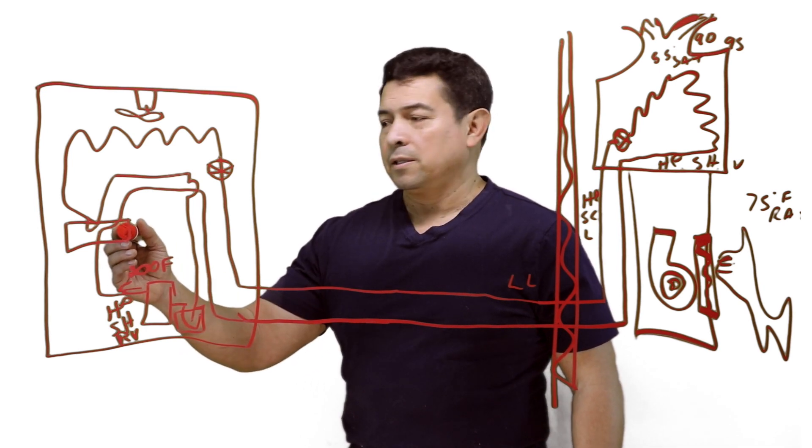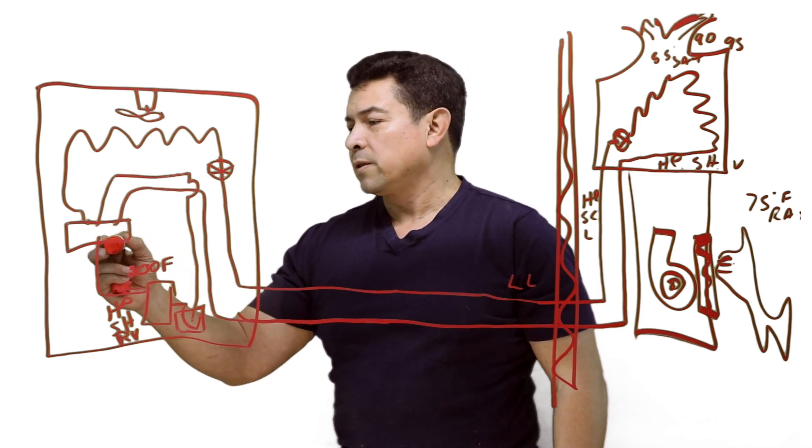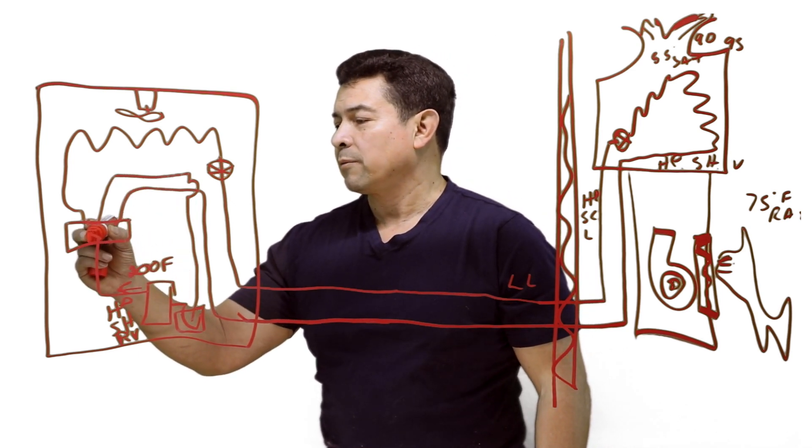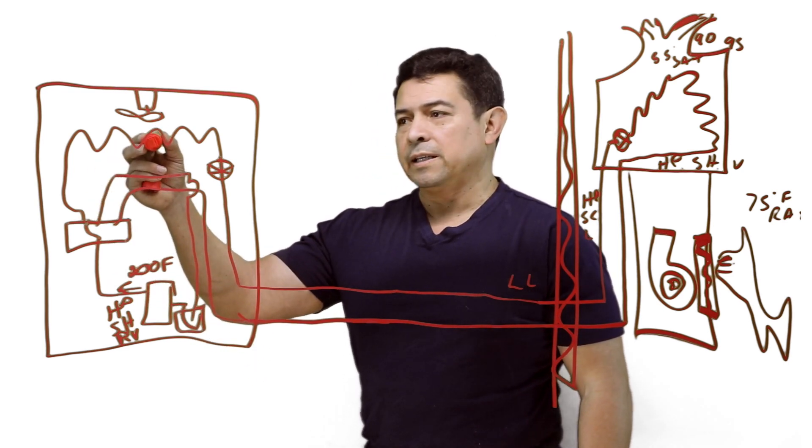Now what happens is, at some point, you're going to want cooling again. So now, this refrigerant is going to be rerouted from here to the outdoor coil, so that this can condense it.